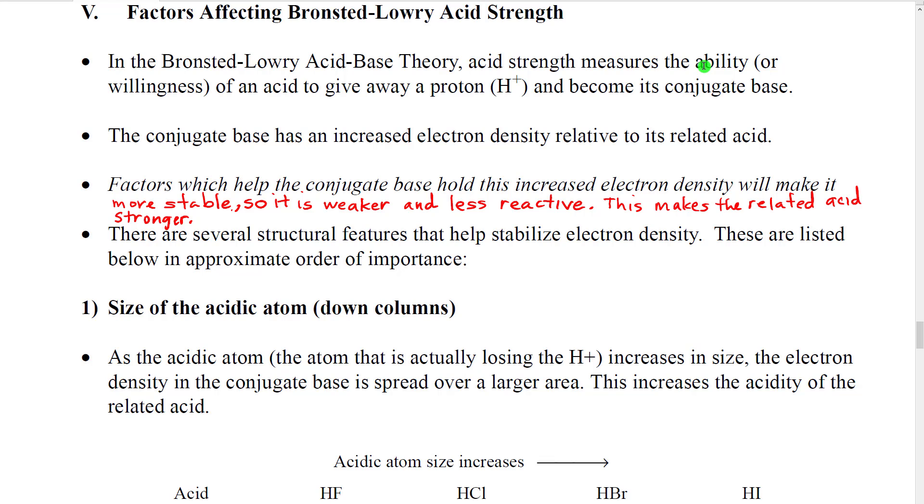In that process of giving away hydrogen plus, the structure changes. The acid changes into the structure of its conjugate base. One of the things that we notice when we compare a conjugate base to its related acid, its original acid, is that the electrons, the number of electrons in these two species, stays the same while the structure changes. In fact, the acid will have more atoms, because of one additional hydrogen, than the conjugate base.